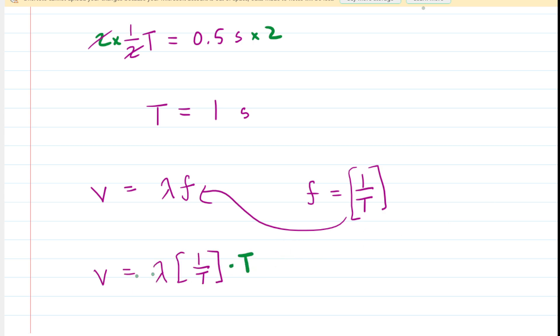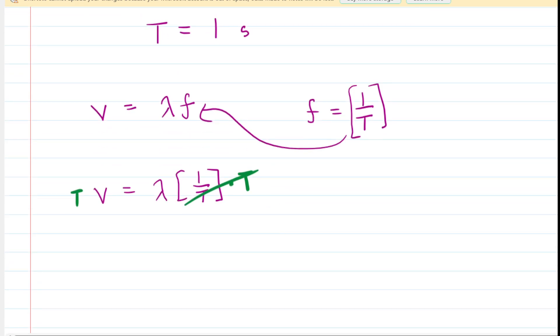And then, if we multiply both sides of that equation by the period T so that it cancels out on the right-hand side, we can see that the period multiplied by the speed is going to give us the wavelength.